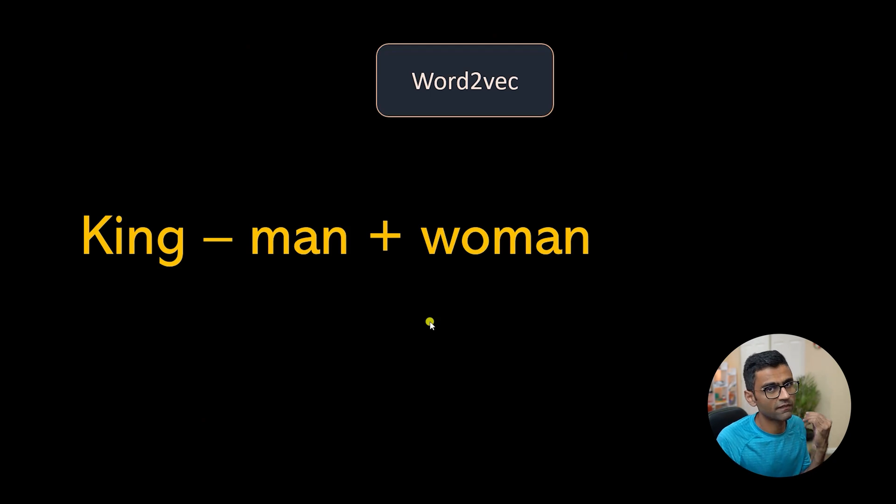Word2vec has this famous example that you can do arithmetic. You know how you do arithmetic with numbers - like 2 plus 3 is equal to 5, minus 1 is equal to 4. You can do similar things with text and that's mind-boggling. See, king has all these attributes - authority, king is rich, it has power. But if you remove the element of man from that and add woman it becomes queen, correct. Queen also has power, authority, lot of money, but the gender is different. So you subtract the gender, add a new gender, now you get queen. We'll look at all of this in detail.